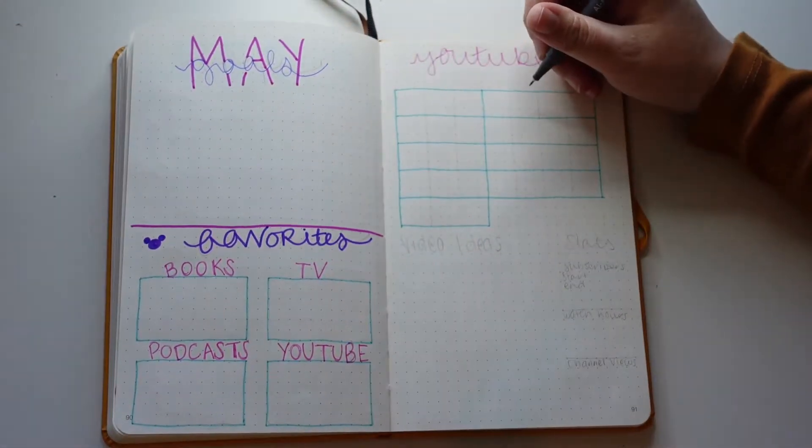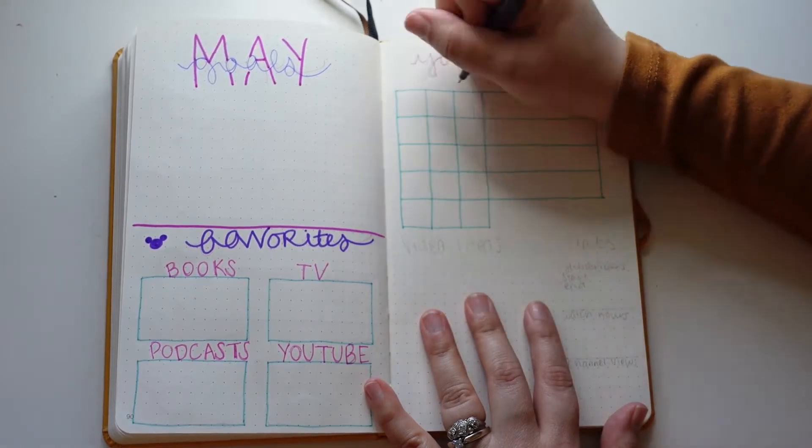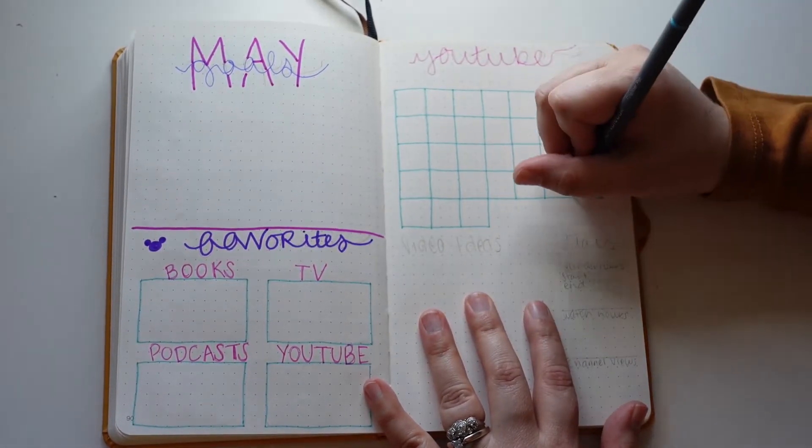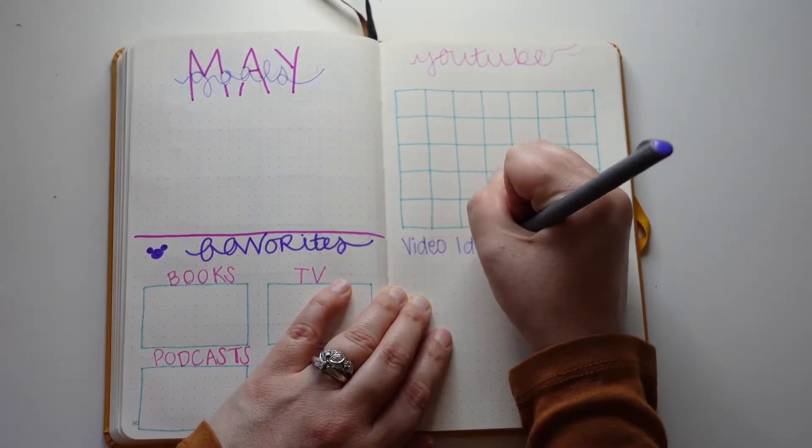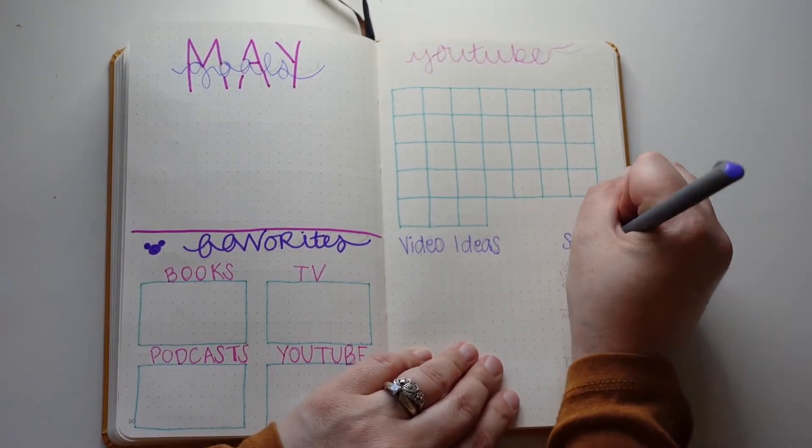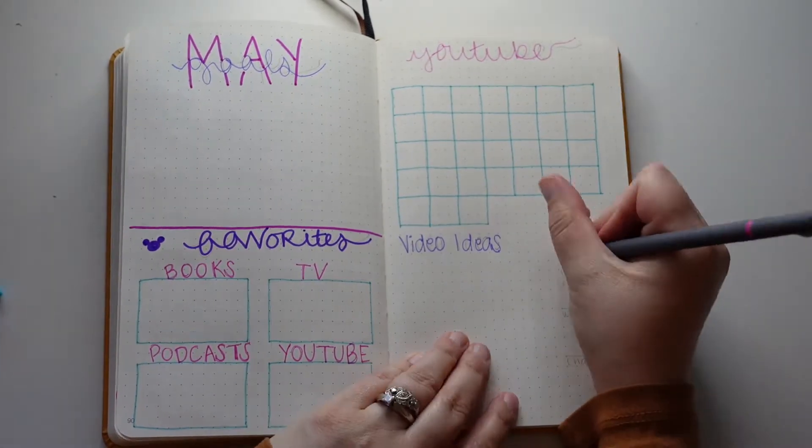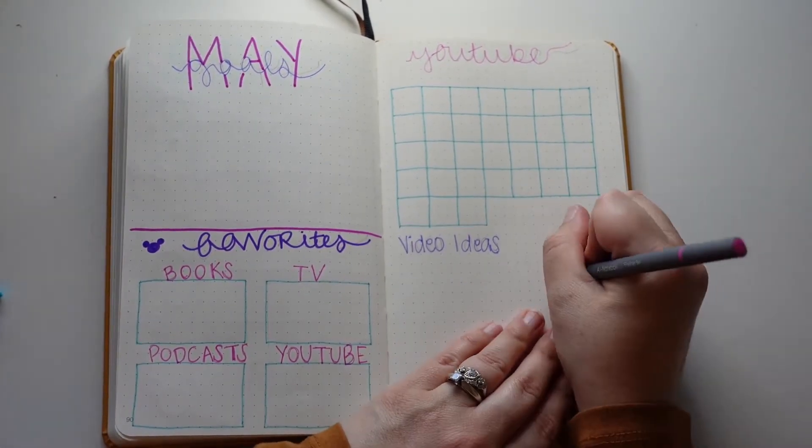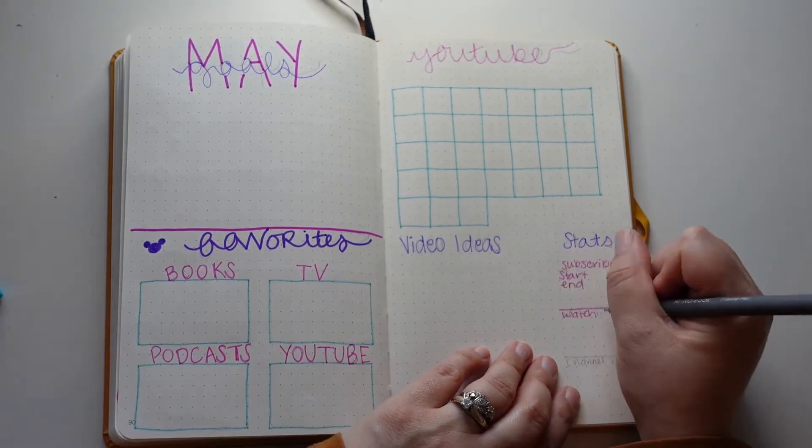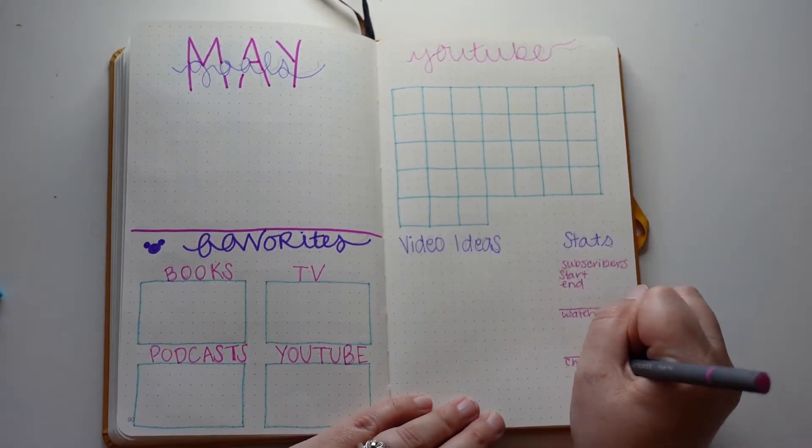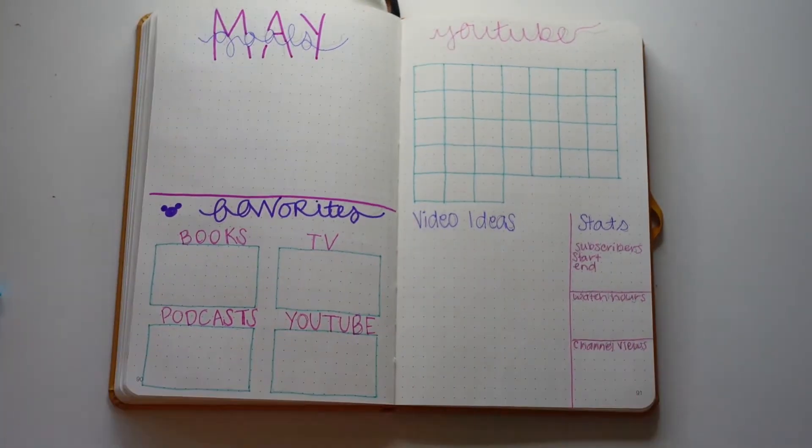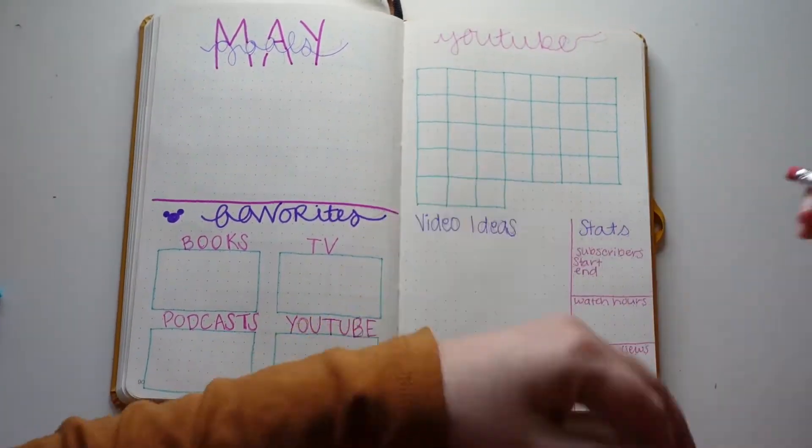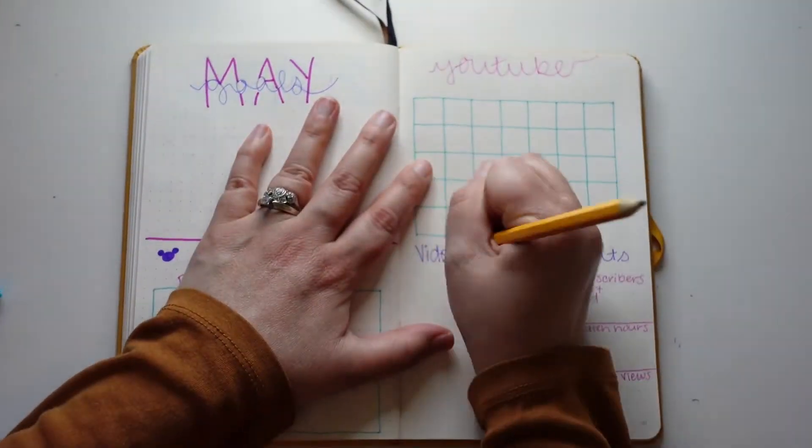On the right hand side is my YouTube tracker page. I have the month of May at the top, and I actually forgot to write in the numbers but I went back and did that later. In that calendar, I fill out the days that I'm filming and the videos that are going out each Sunday. So I can kind of plan out those dates. And then I just have video ideas and stats down at the bottom.